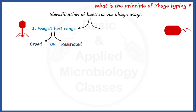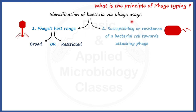If a particular phage has a broad host range, it means that phage can attack different types of genera, species, and strains of bacteria. If a particular phage has a restricted host range, it means that phage can only act on some specific strains of bacteria. The second factor on which phage typing depends is the susceptibility — or sensitivity or resistance — of a bacterial cell towards the attacking phage.